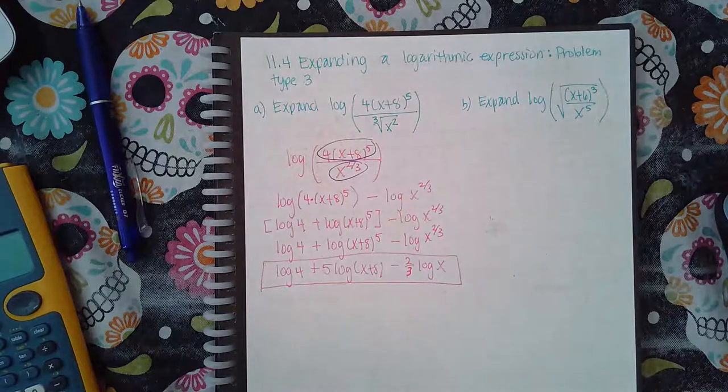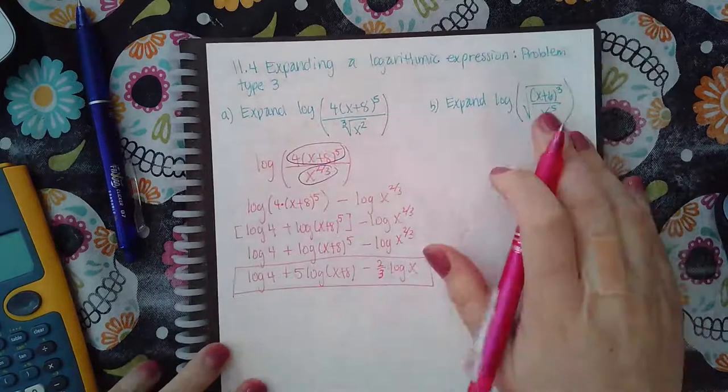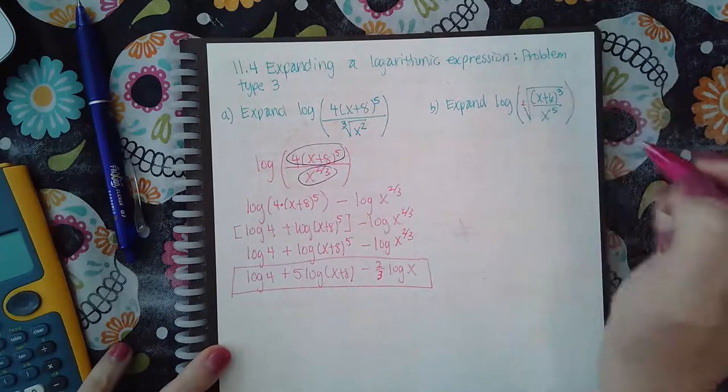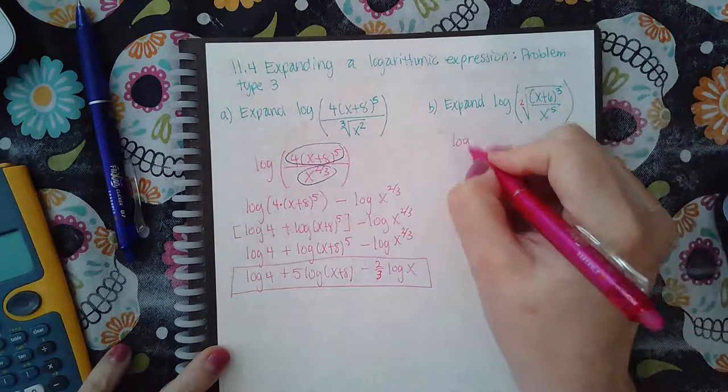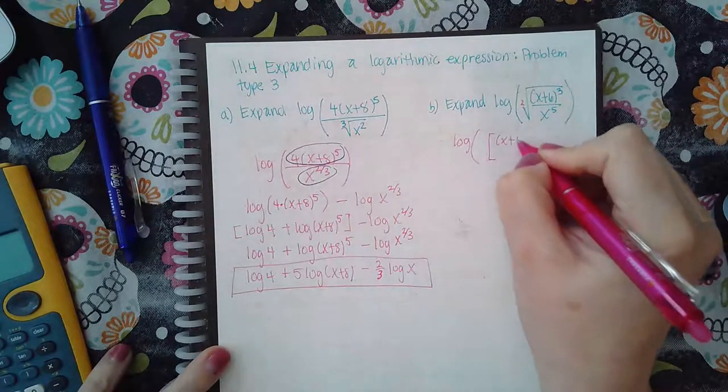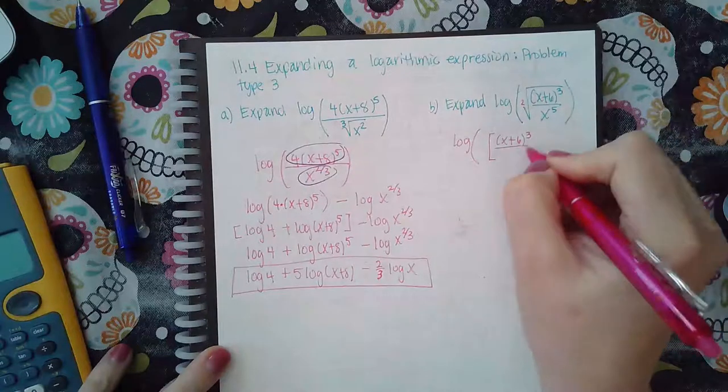Now for this one we're going to do the same thing. This doesn't have an index so it's automatically a 2, so I'm going to rewrite this. I'm going to put a bracket here so I have x plus 6 to the power 3 over x to the 5th, but the whole thing will have a one half exponent because of the radical.